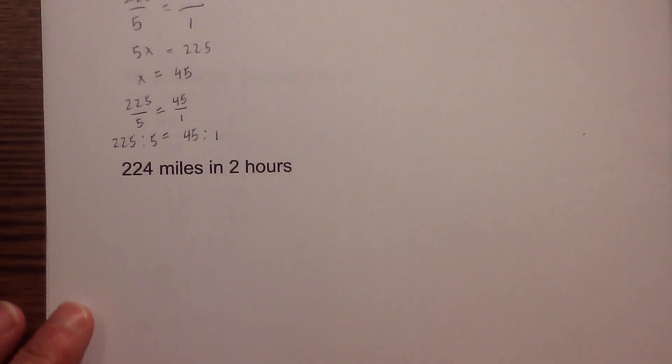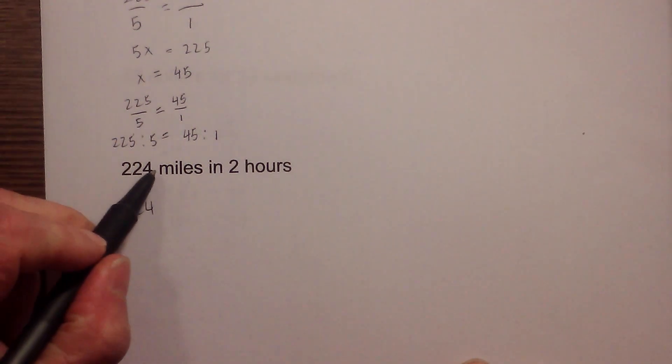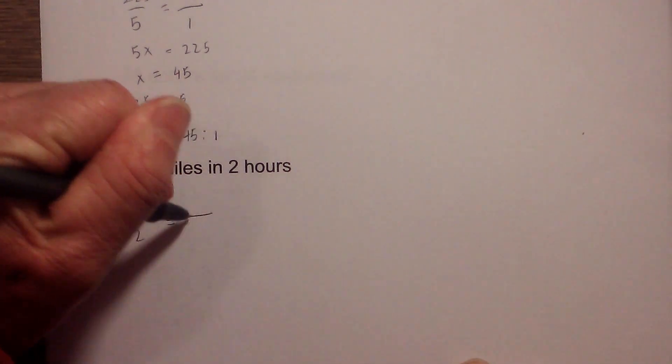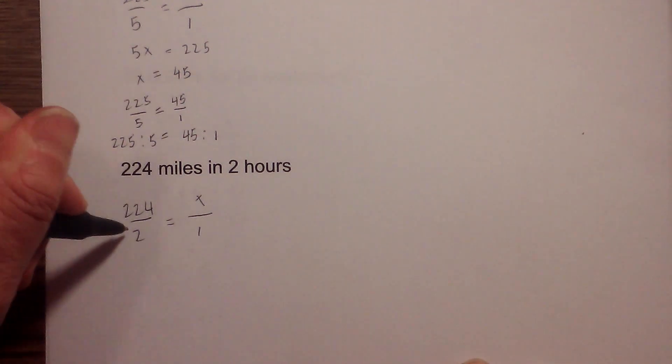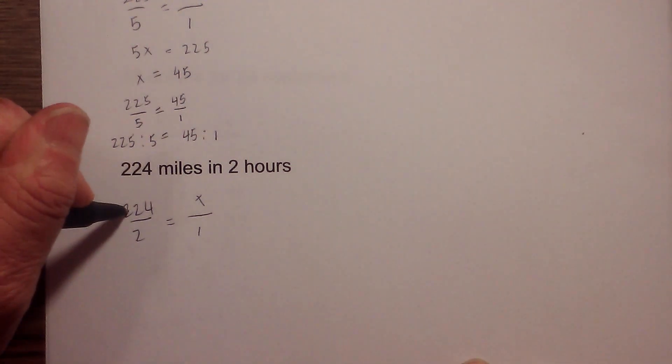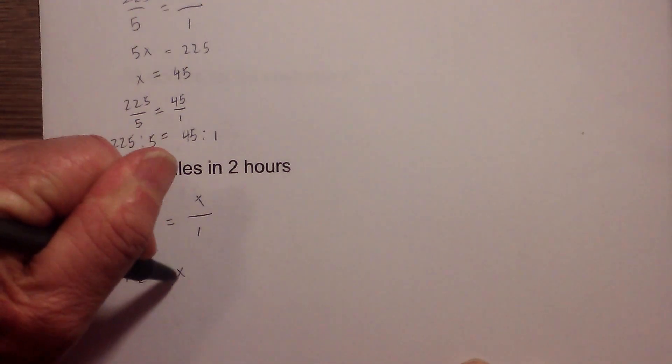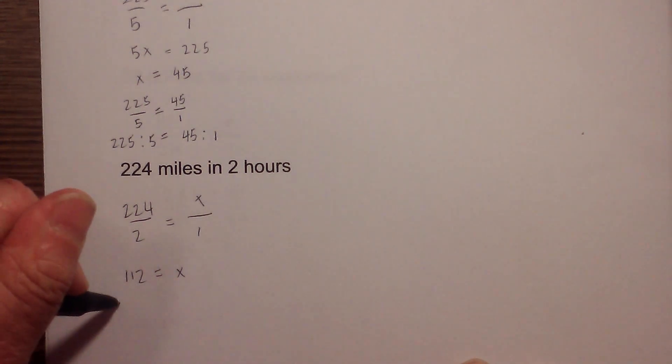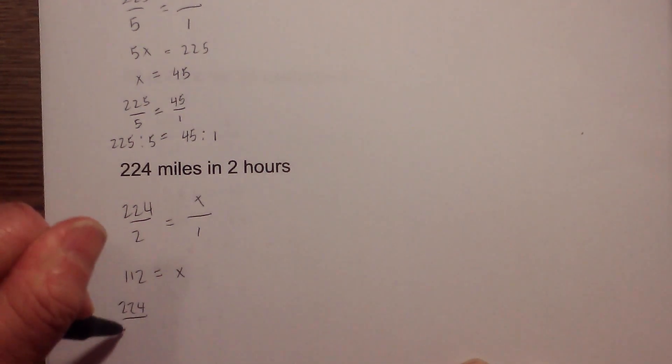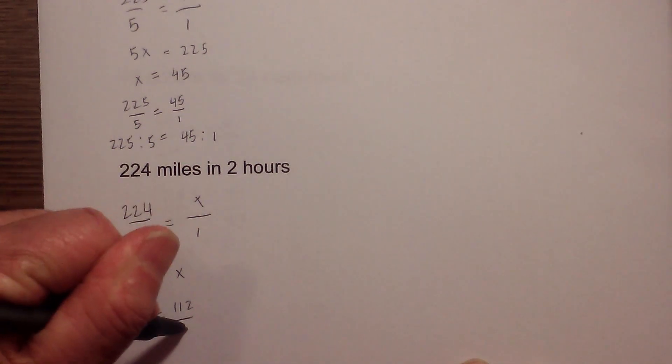I'll show you a shortcut. All you really need to do is write it in fraction form. You go 224 miles in 2 hours, so I'm going to write this in fraction form, 224 over 2, equal to 1 over x. Just divide the numerator by the denominator: 224 divided by 2 is 112, which equals x. So 112 is your unit rate. I can rewrite that as 224 over 2 is equal to 112 over 1.